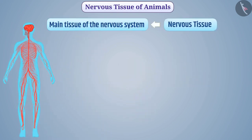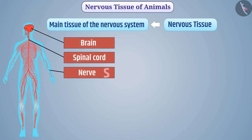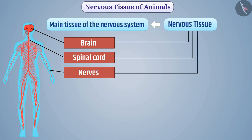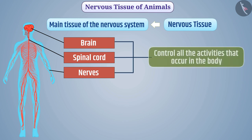Nervous tissue is the main tissue of the nervous system. Brain, spinal cord, and nerves are made up of nervous tissue. The brain, spinal cord, and nerves together control all the activities that occur in the body.